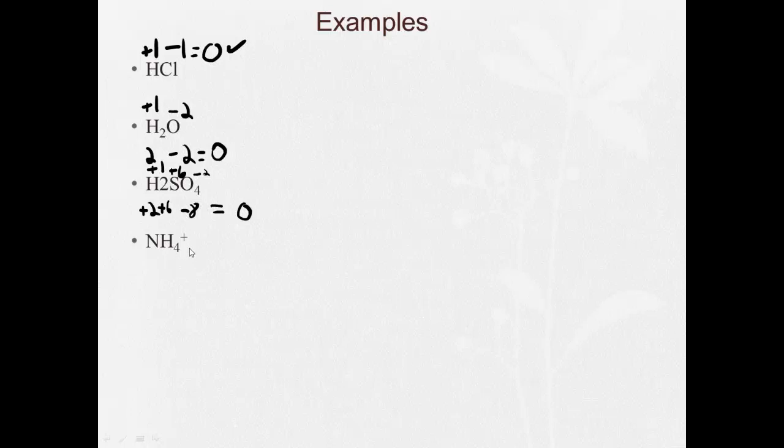NH4 plus. Now, when we look up the electronegativities of these, right? Hydrogen's electronegativity is 2.1. Nitrogen's electronegativity is 3.0. So even though hydrogen's written at the end here, the hydrogen's going to be positive. So each one is going to be a plus one. For a total of plus four. Now, in this case, we're not going to be equal to zero like these other ones because it's NH4 plus. It's an ammonium ion. So the net charge is plus one. So what plus four gives plus one? Well, minus three plus four equals plus one. That means our nitrogen is minus three.